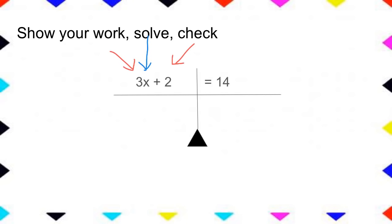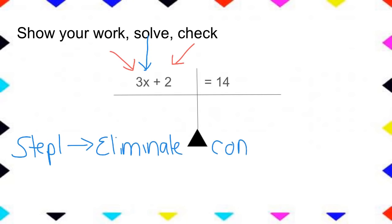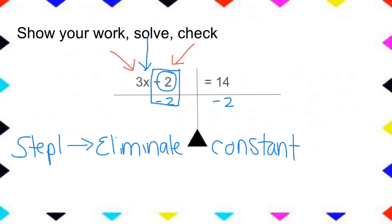We're going to do PEMDAS backwards. Step one — write this down — we are going to eliminate the constant. That happens to be the two right here. It used to be adding two, and so we know with our inverse operations that the opposite of adding two is subtracting two. But I can't do something to one side without also doing it to the other. A positive two and a negative two make an inverse pair — that's zero. And so I'm left with three X's on this side of my balance and 12 on the other.